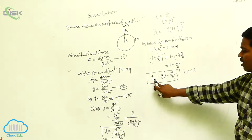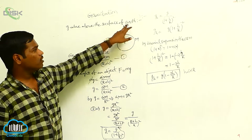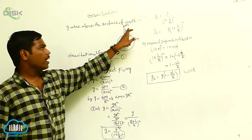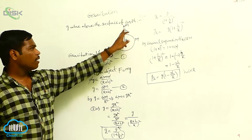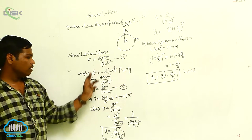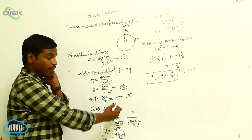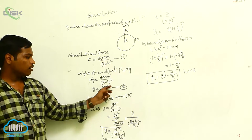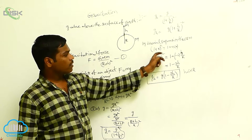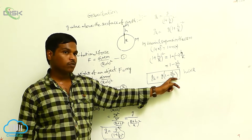As the height increases, the acceleration due to gravity decreases. Here, capital M is the mass of the earth and small m is the mass of an object at height h, so the distance between them is r plus h. The gravitational force gives g_h = GM/(r+h)^2. Since weight F = mg and GM = g·r^2, we get g_h = g/(1 + h/r)^2, and by binomial expansion, g_h = g(1 - 2h/r).